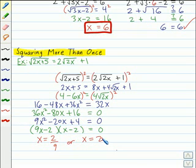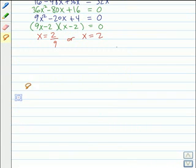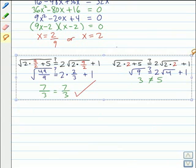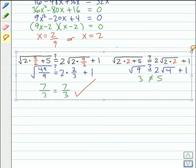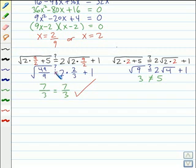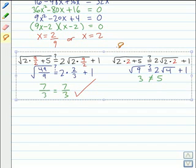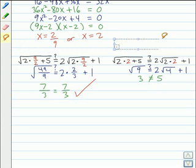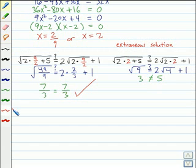But again, we should substitute these values into the original equation to check them. Here's what we get when we substitute them back in. 2 ninths checks out, but 2 does not. So 2 is what we call an extraneous solution. It's a solution we get from solving the equation, but it doesn't work in the original equation. So the only acceptable solution for this equation is 2 ninths.